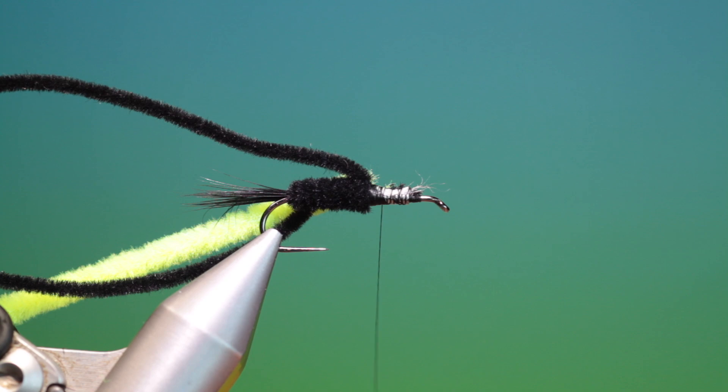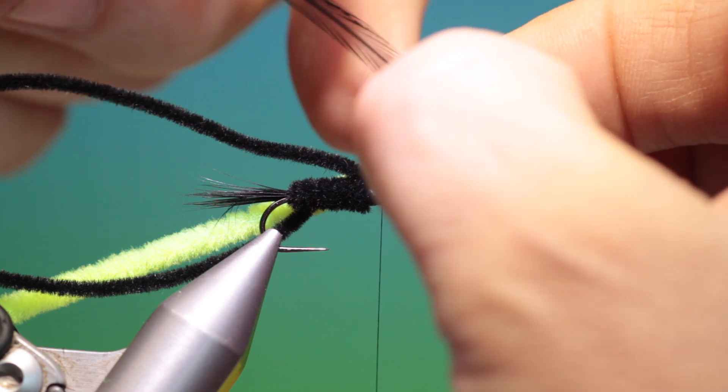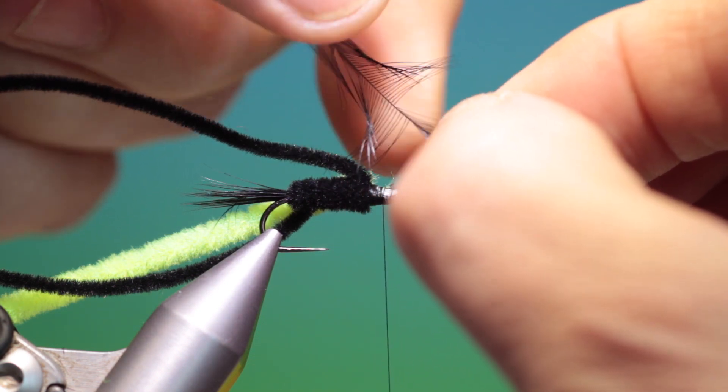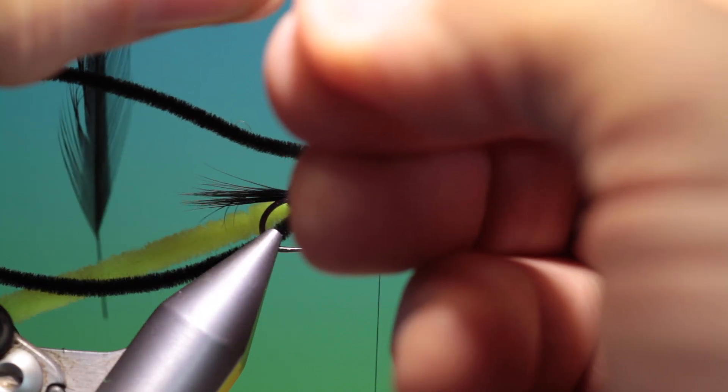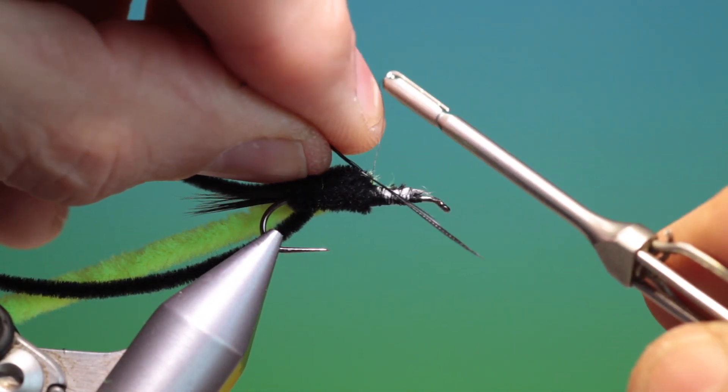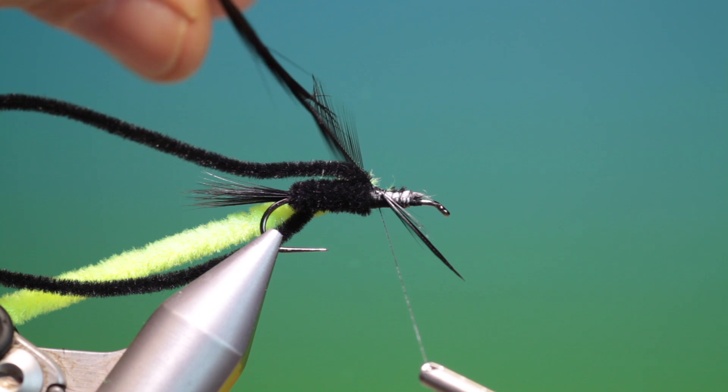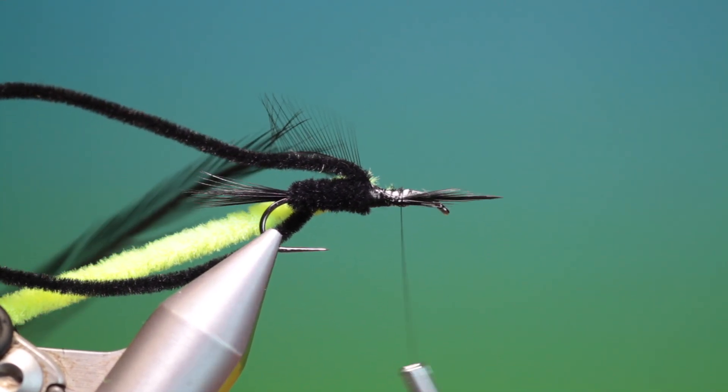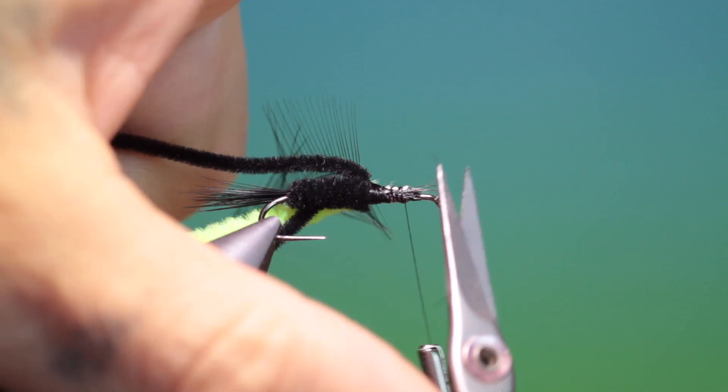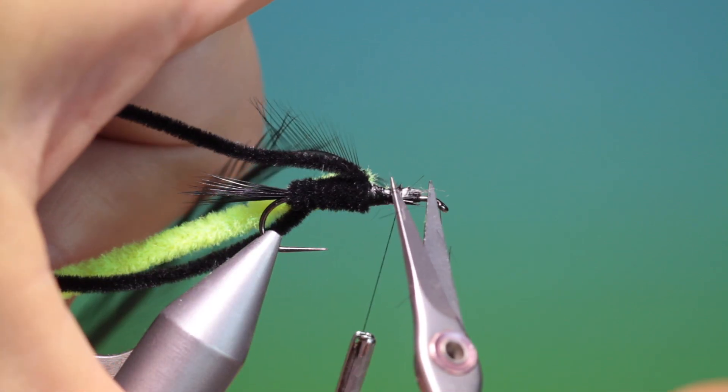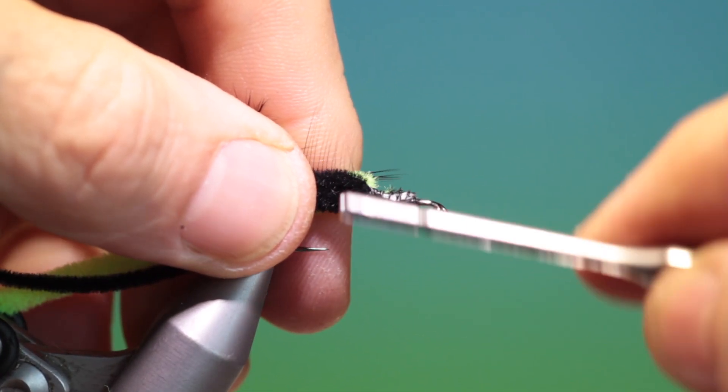And then I'll just hang that out the way. Then I've got a black cock hackle. I take hold of the tip like this and I pull the fibers back. We're going to tie this in reverse. So just holding the fibers back, place it on the hook shank there. That's good. Then we can go forward, just take my scissors and trim that off. Remember not to crowd the hook eye. We need room to finish because it's quite a bulky finish on a Montana, but it's a very good technique.